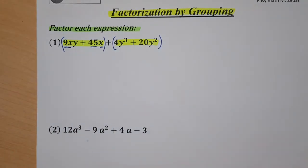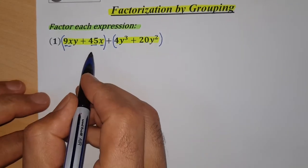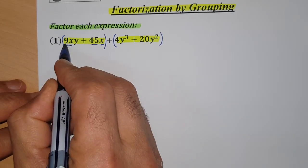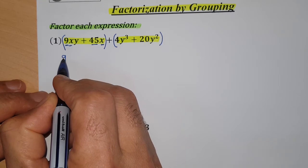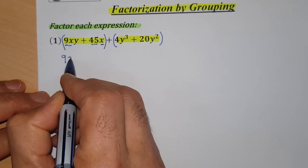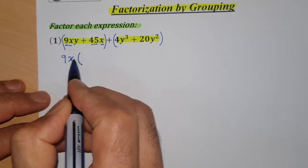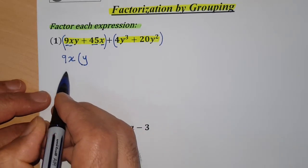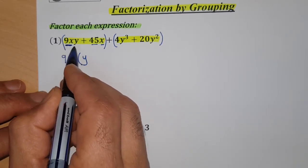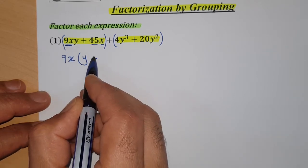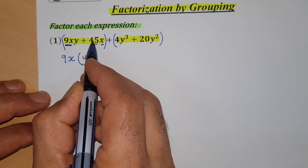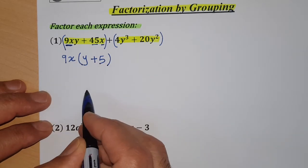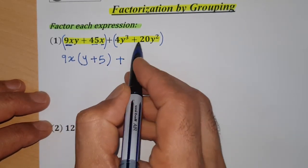Now take out the highest common factor of each group. For the first group, the highest common factor is 9x — since 9 and 45 are both divisible by 9, and x is common. Divide: 9xy divided by 9x equals y. Write it inside the bracket, plus 45 divided by 9x equals 5.